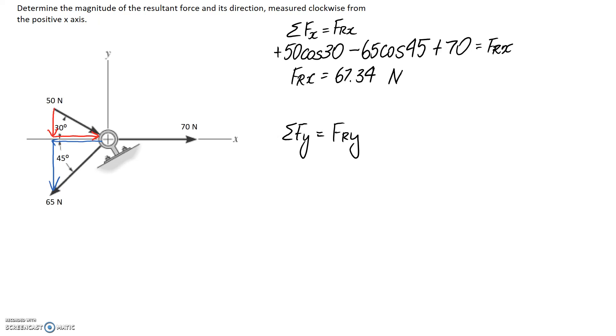Now we just need to repeat this process except for the y direction. Let's start with the 50 newton force and the y component of it is going to be the opposite, so the sine component of 30, so it's going to be 50 sin 30. Thinking about whether it's going up or down, it's going downwards which is the negative y direction so it's going to go in as a negative.